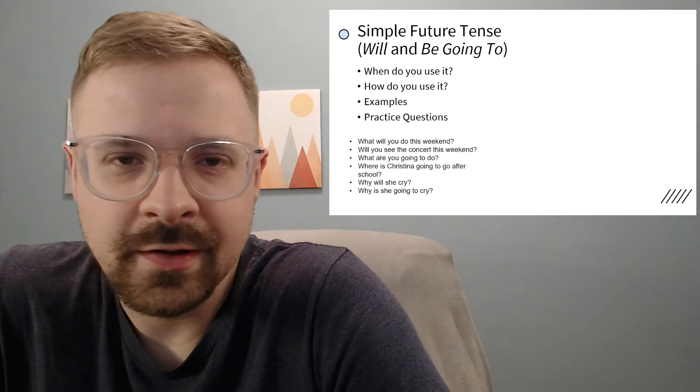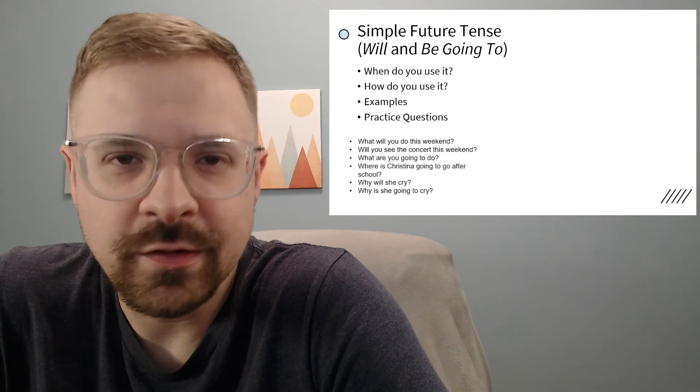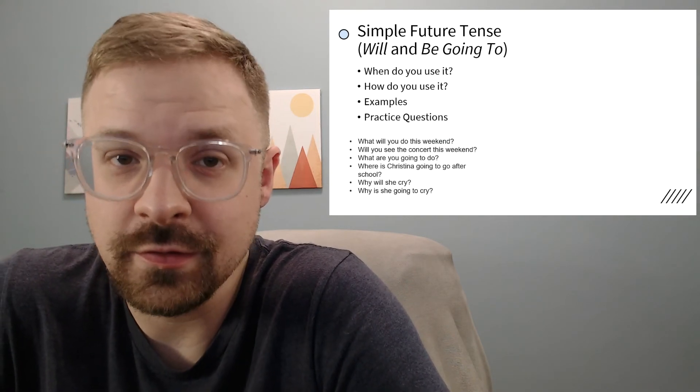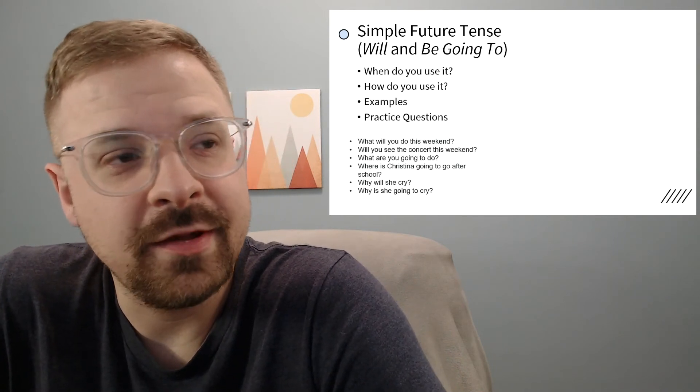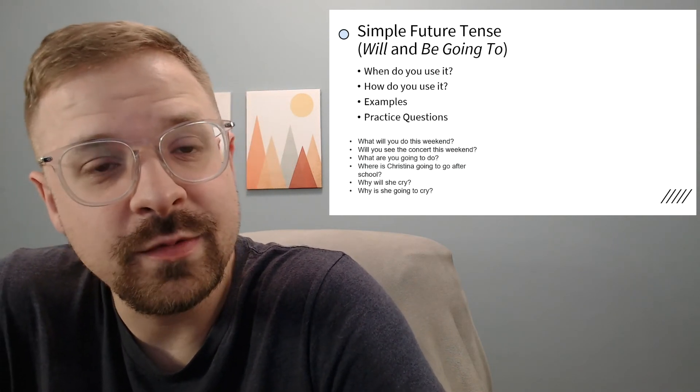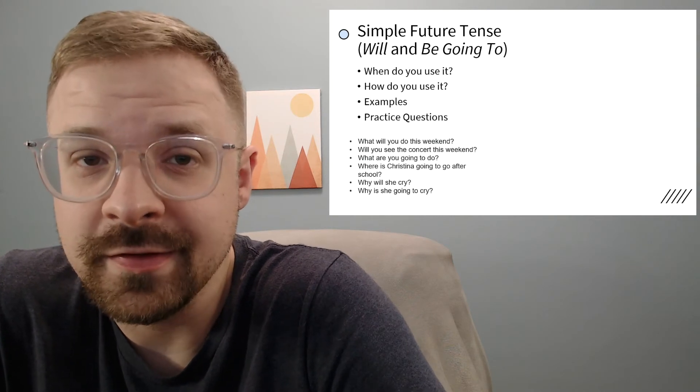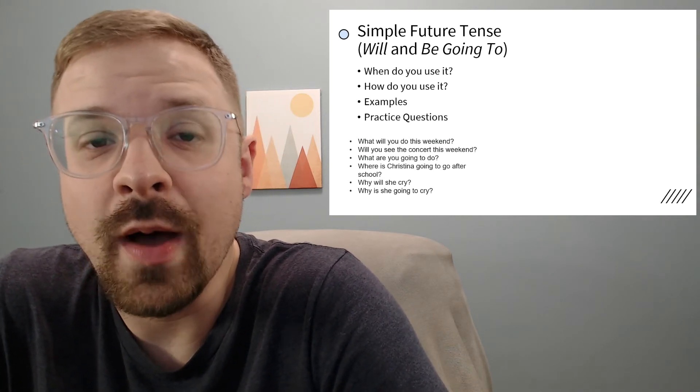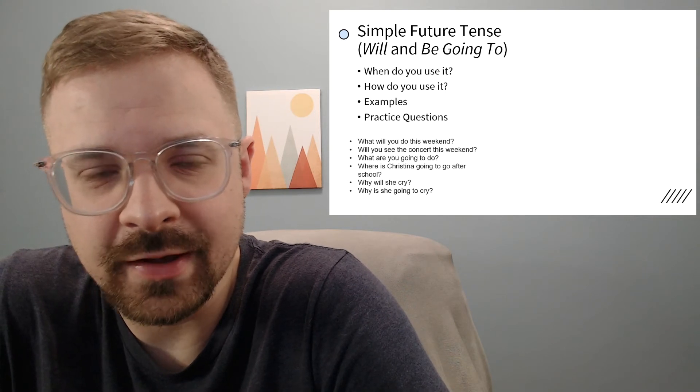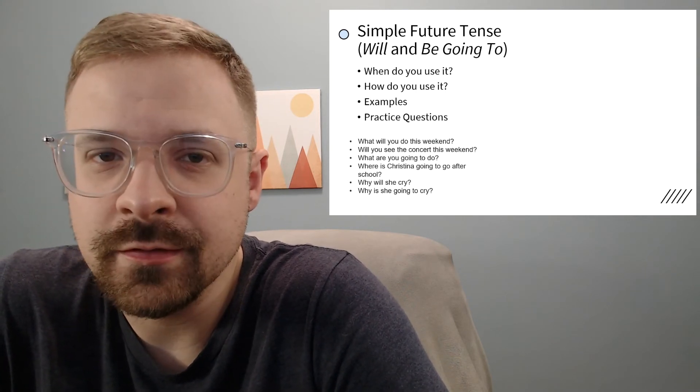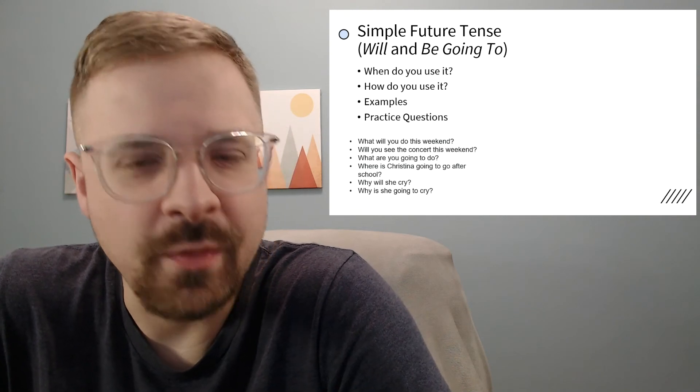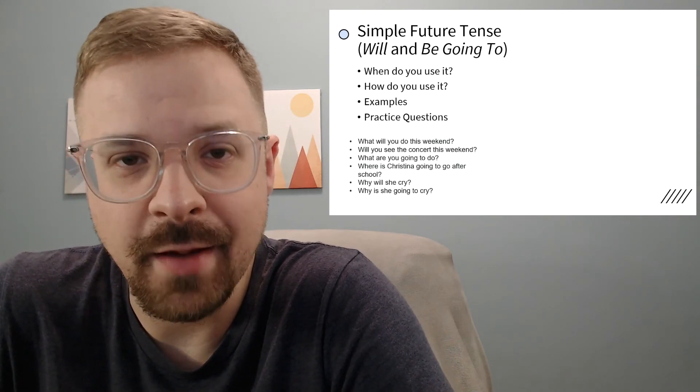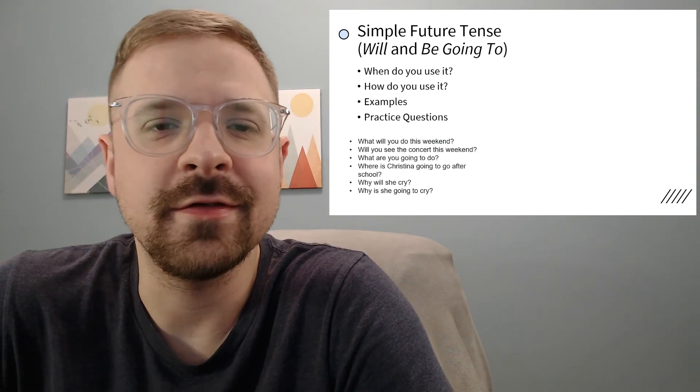Look at number two: will you see the concert this weekend? Grammar in English is a little predictable, so we know 'will you' - yes I will, 'can you' - yes I can, 'do you' - yes I do. So with 'will' it goes like this: will you see the concert this weekend? Yes, I will see the concert this weekend. Or, and this is the tricky part, no I won't see the concert this weekend. We say yes I will or no I won't. 'Won't' is spelled W-O-N apostrophe T - this is the same as 'will not.'